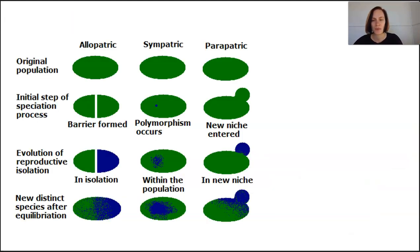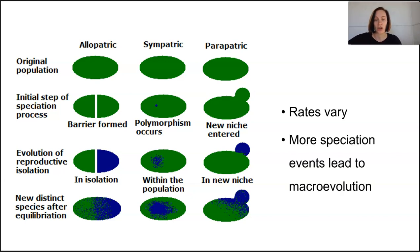These speciation processes occur at different rates depending on the ecological conditions at the time. After periods of mass extinction, the evolutionary radiation means that speciation might be occurring in a few thousand years. But over other periods, species might diverge in time frames like millions of years, gradually accruing changes from the subpopulations.